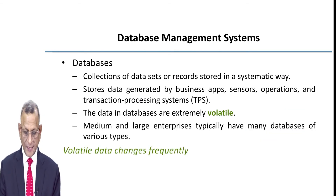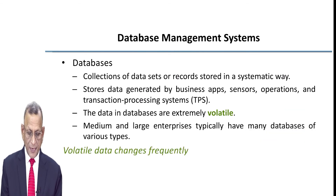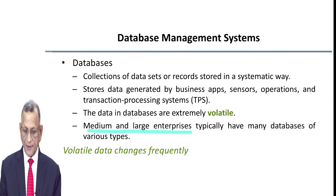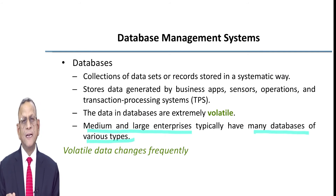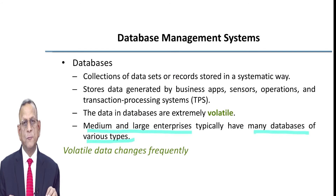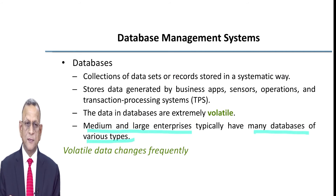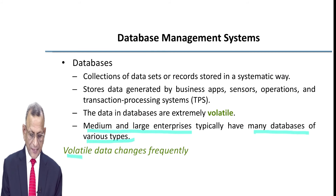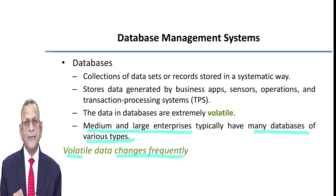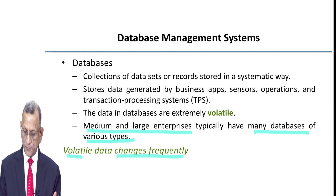Medium and large enterprises typically have many databases of various types — like a customer database, product database, suppliers database, and human resource database. In this manner we may have lots of databases, and this volatility is the nature of change happening frequently.